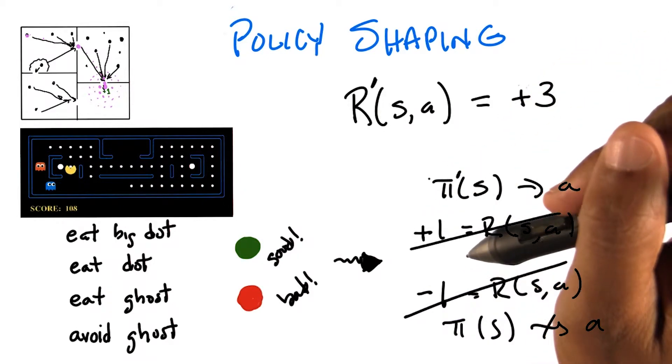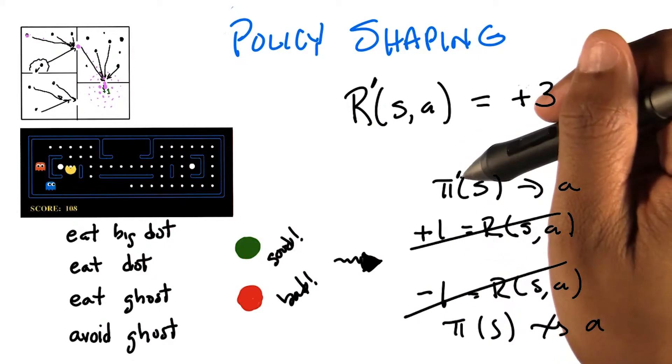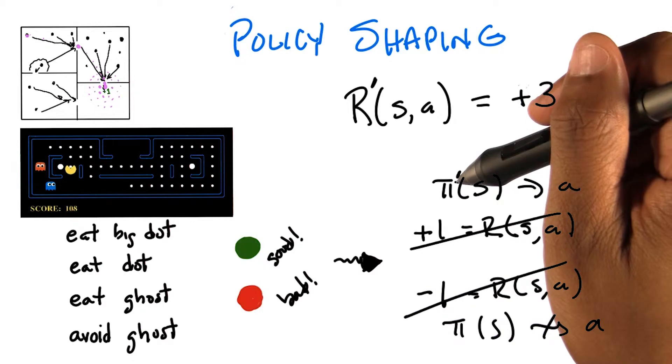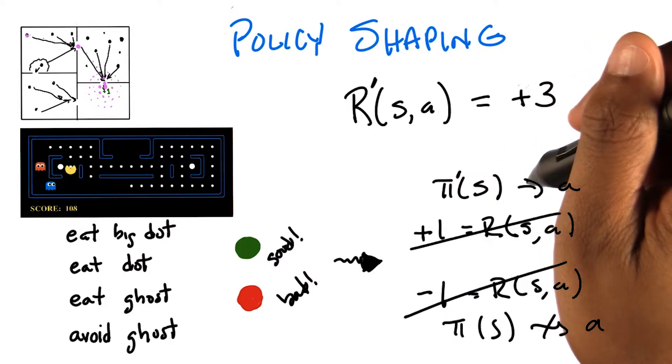So I was interpreting what you described as saying, if a person gives positive feedback for an action in a state, and it's not the action that the agent would have taken in that state, then just replace it. Just make a modification of the policy so that that's the action that's taken.